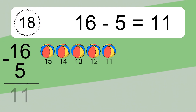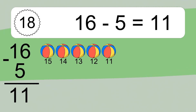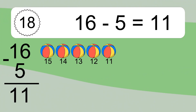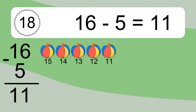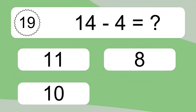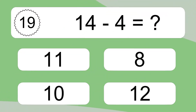16 minus 5 equals what? 16 minus 5 equals 11. Let's count it: 15, 14, 13, 12, 11.